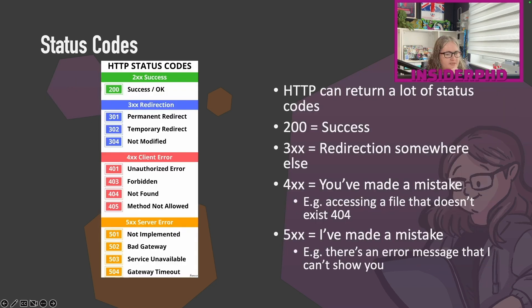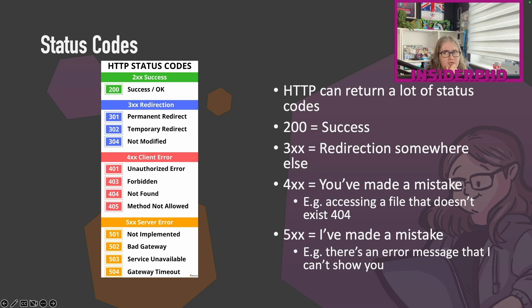HTTP can return many different status codes. 200 is a success. 300 is a redirection. 400 usually means you've made a mistake — for example, trying to access a file that doesn't exist; you'll see unauthorized or forbidden errors here. 500 errors mean the server has made a mistake — it might be a generic error or it might actually be the point of what you were trying to do in cases like application-level bugs.